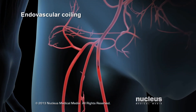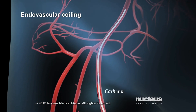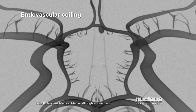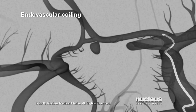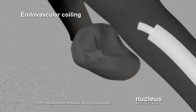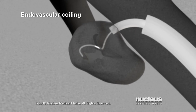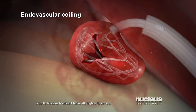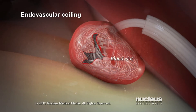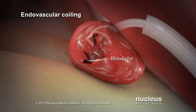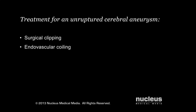In endovascular coiling, your doctor will put a plastic tube, called a catheter, into a large artery in your groin. Using a live x-ray view, your doctor will advance the catheter through your arteries until it reaches the aneurysm. Through the catheter, your doctor will insert one or more flexible wires into your aneurysm. The wires will coil up and cause a blood clot to form inside your aneurysm, which will block off the aneurysm from the rest of your artery. Similarly, if you have an unruptured cerebral aneurysm, your doctor may recommend surgical clipping or endovascular coiling. In addition, if your aneurysm is small and not causing pain or other symptoms, your doctor may observe your aneurysm for a period of time before performing either of these procedures.